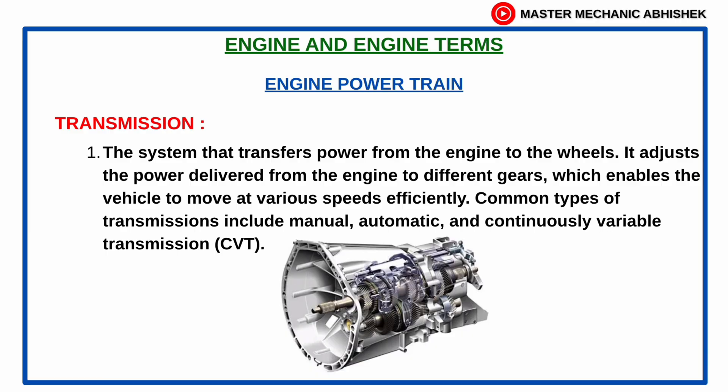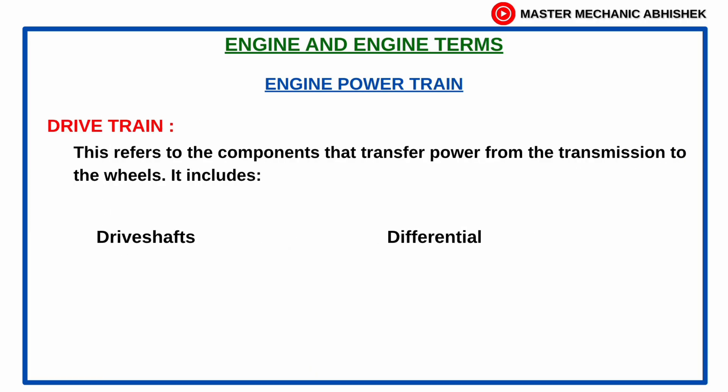Transmission is the system that transfers power from the engine to the wheels. It adjusts the power delivered from the engine to different gears, which enables the vehicle to move at various speeds efficiently. Common types of transmissions include manual, automatic, and continuously variable transmission (CVT).